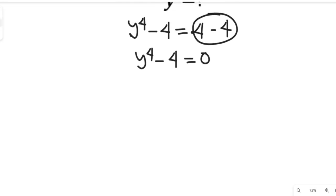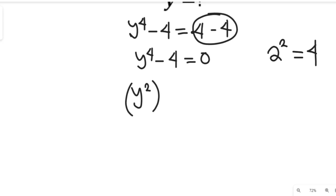The next thing we'll do is simplify further. Remember, 2 to the power of 2 is equal to 4, so we'll apply that here. We'll have y squared to the power of 2 minus 2 to the power of 2, and this will be equal to 0.